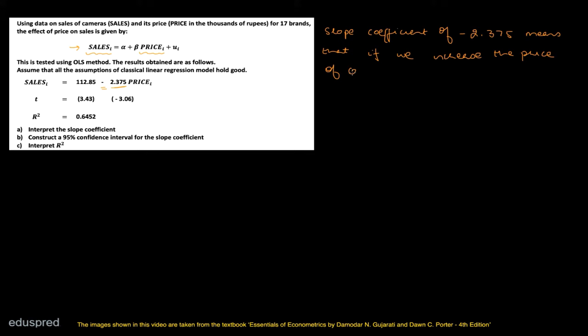If we increase the price of the camera by one unit, then on an average, the sales of camera — that is the dependent variable — would reduce by 2.375 units.